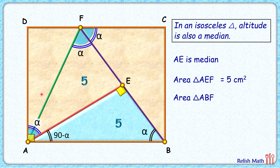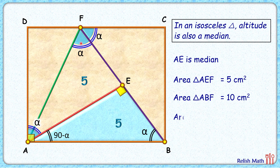The area of the complete triangle ABF is 5 plus 5, or 10 cm². The area of the triangle is half of the base AB times the height, and that height is the same as the width of the rectangle. So the area of this triangle is half the area of the rectangle. Therefore, the area of the rectangle is twice the area of triangle ABF, which is 2 times 10, or 20 cm². I hope you enjoyed the solution — see you in the next video!